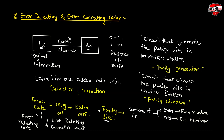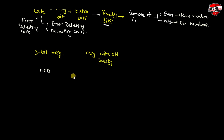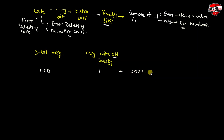Let us understand this with an example. We have a 3-bit message and want to make a message with odd parity. If the message is 000, there are no ones, so to make odd parity we add a parity bit of 1. The final message is 0001, giving a total of one '1', which is odd. For message 001, the number of ones is already 1 (odd), so we add a parity bit of 0. The final message is 0010, still with one '1', which is odd.